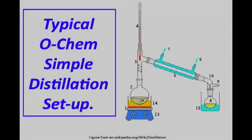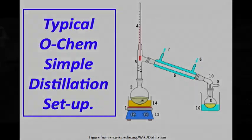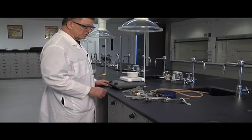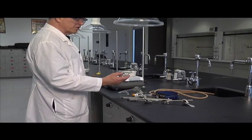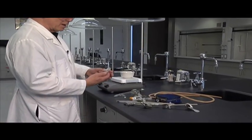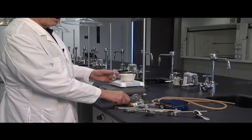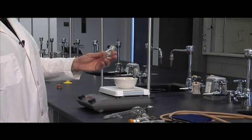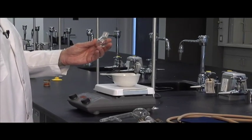You'll need the stirring hot plate and our sand bath. In our experiment, they want us to distill out of a 25 milliliter round bottom flask. And you always, always, always put in a magnetic stir bar. We never boil anything without a magnetic stir bar in it.